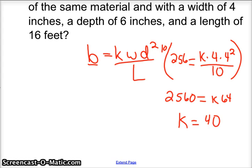And that's 40. So that's our constant. So now we have a new equation: our beam is 40 times the width times the depth squared divided by the length.